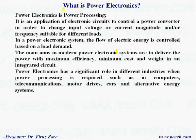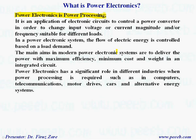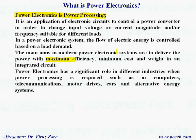What is power electronics? Power electronics is power processing. It's an application of electronic circuits to control a power converter in order to change the input voltage or current magnitude and/or frequency suitable for different loads. In a power electronics system, the flow of electric energy is controlled based on load demand. The main aims in modern power electronics systems are to deliver power with maximum efficiency, minimum cost, and weight in an integrated circuit.